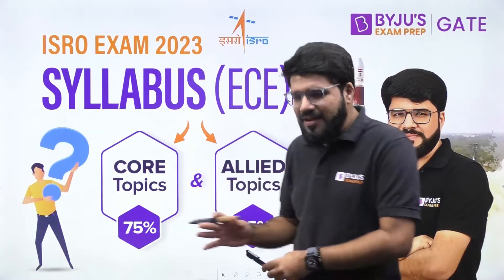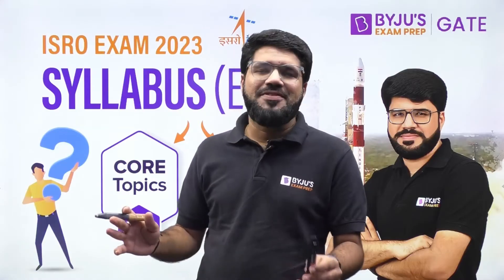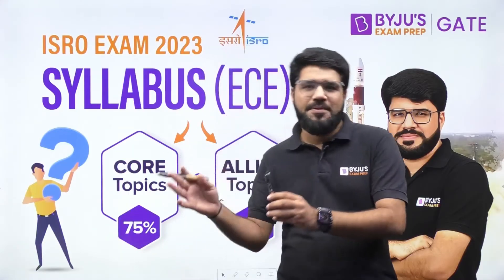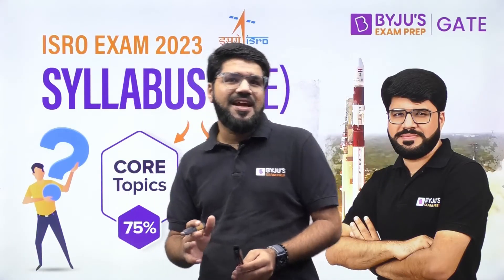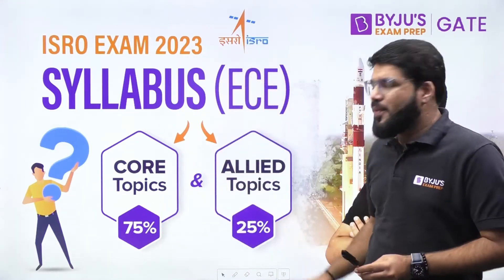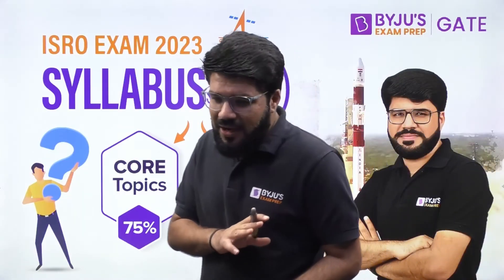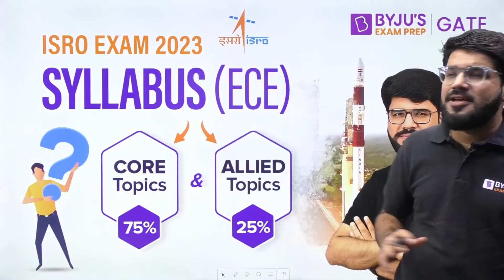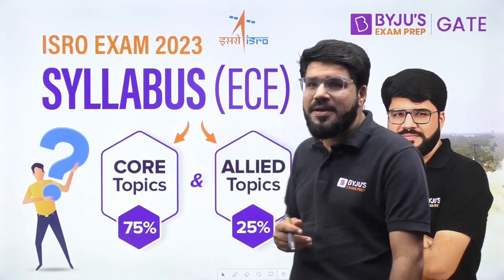They have given the categorization of the syllabus into technical as well as aptitude. Aptitude is separate, but within that technical portion they have specified that 75% would be the core topics and 25% would be the allied topics related to your branch. So what are those topics?